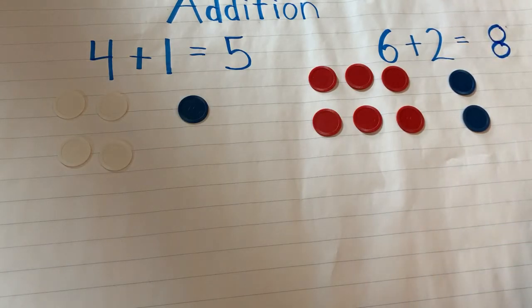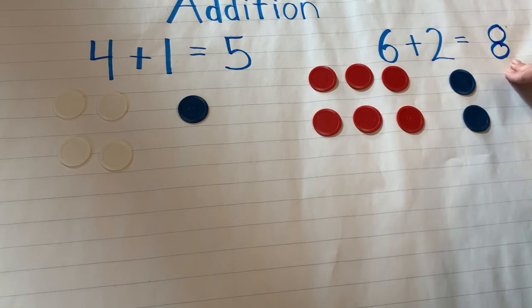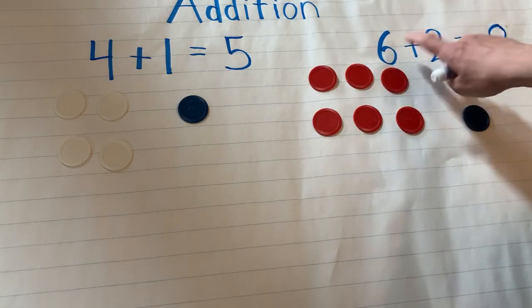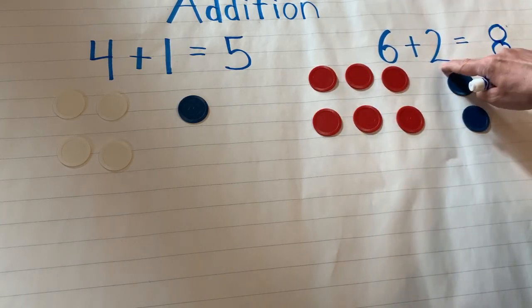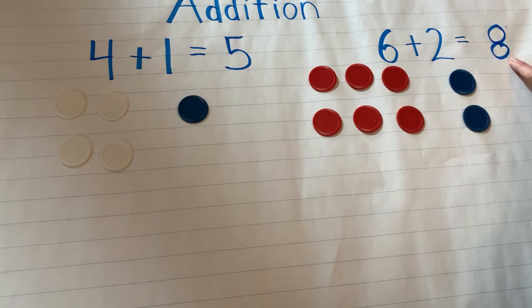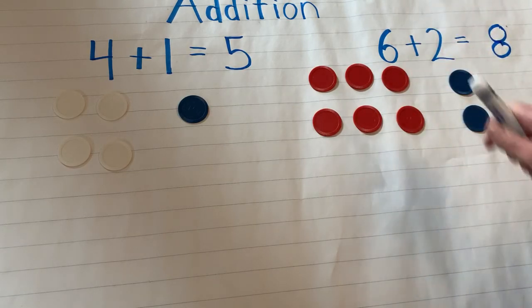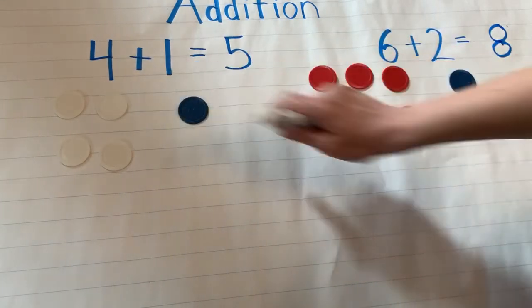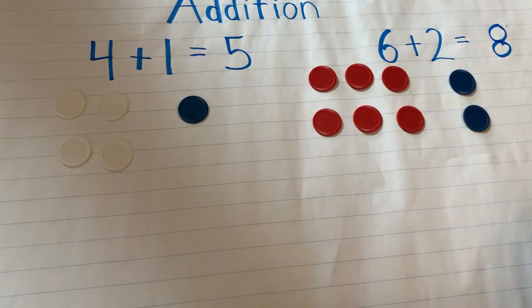So now we know that this is greater than six and greater than two. Because when we add, we are putting items together for the number or the amount to get bigger or greater. The sum, the total is the amount all together. And this is called a number sentence. And that's our lesson for today. Hope you have fun. Keep going.